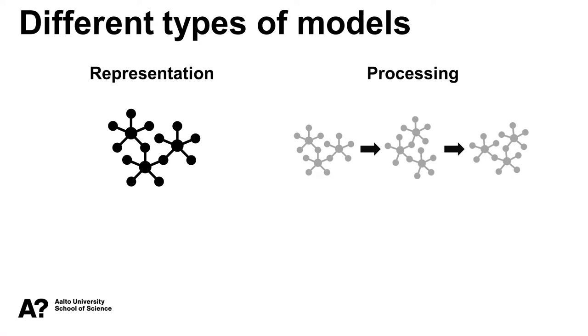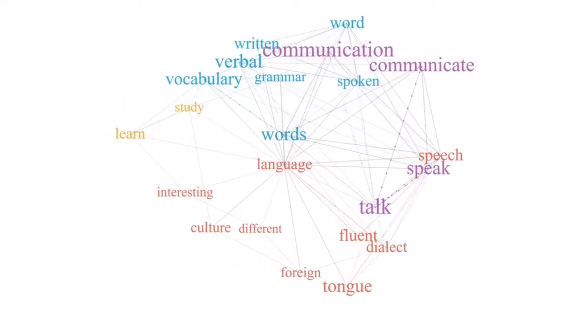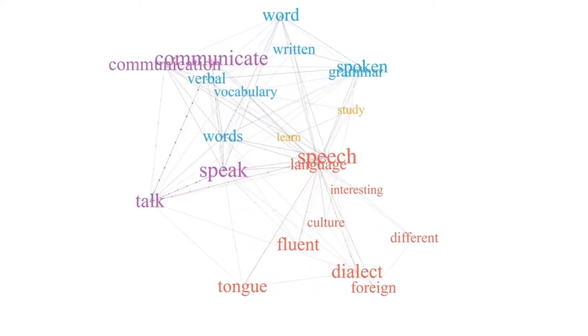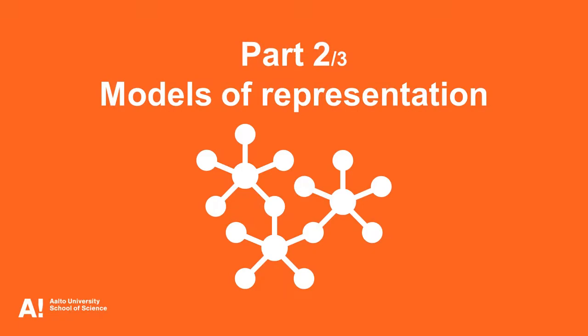Now at this point I would like to start showing you some examples of computational models that we are currently using in neuroscience. But in order to appreciate what these models are trying to accomplish, we must first make the distinction between models of representation and models of processing. Models of representation aim to organize data in such a way as it might be organized in the brain. They are only concerned with simulating the final organization, not how this organization comes about. In contrast, models of processing aim to model how the brain transforms data from one representation into another.